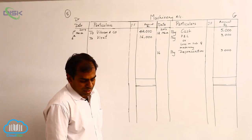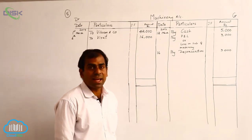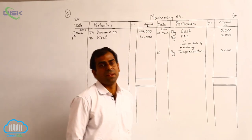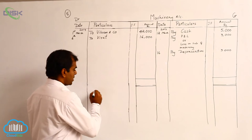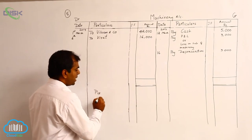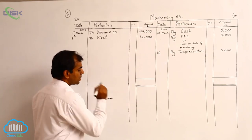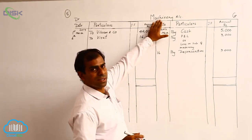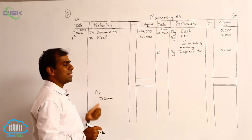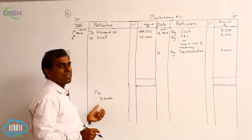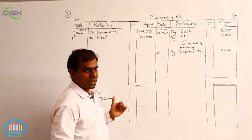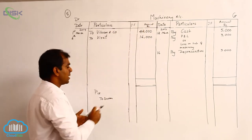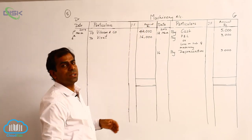On 22nd March, goods were purchased from Swami. The journal entry would be Purchases Account debit to Swami's Account. However, since we are preparing only the machinery account and this transaction does not involve machinery, we will not take this transaction into account.